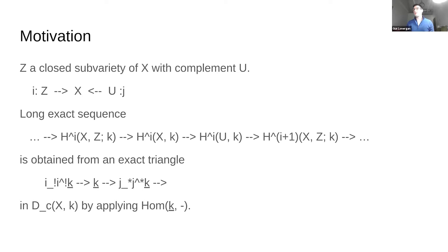There are a couple more objects associated to a closed embedding i: Z → X with open complement j: U → X. There's an exact triangle going from i_! i^! K to K to j_* j^* K — pronounced i-lower-shriek, i-upper-shriek K, mapping to K, mapping to j-lower-star, j-upper-star K. These additional objects associated to i and j in the constructible derived category form an exact triangle.